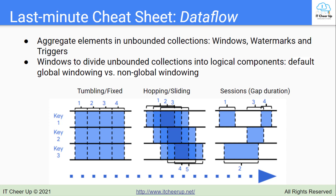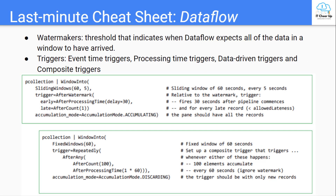However, windowing functions may not be able to handle delayed items. In any data processing system, there is a certain amount of lag between the time a data event occurs and the time the actual data element gets processed at any stage in your pipeline. Beam tracks a watermark to address this.